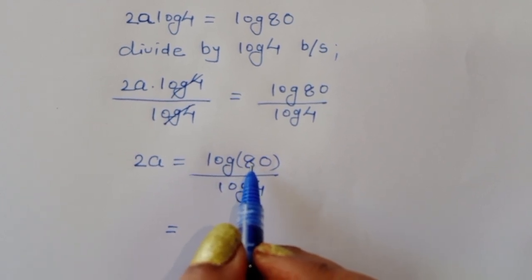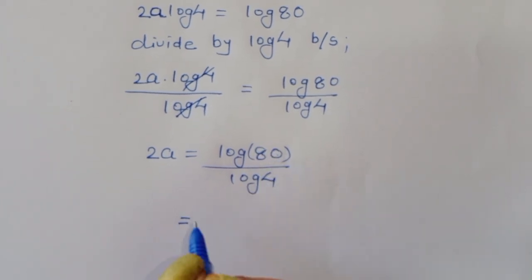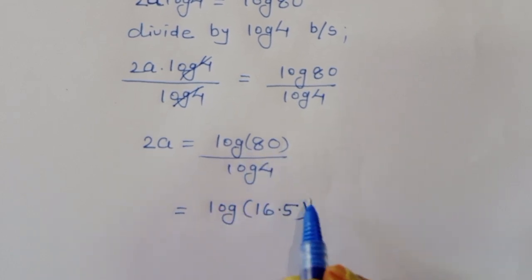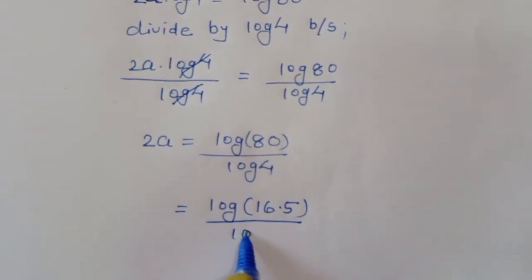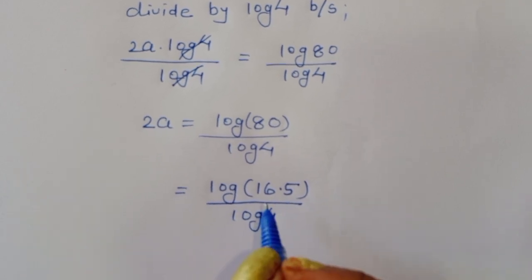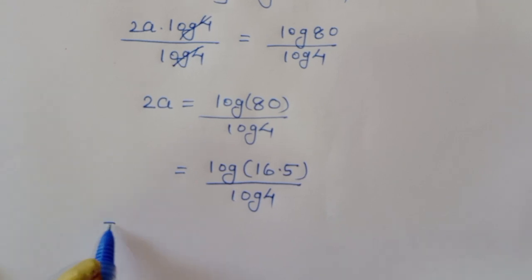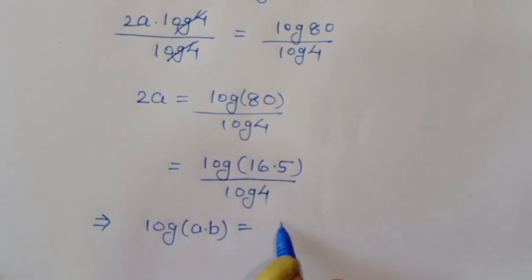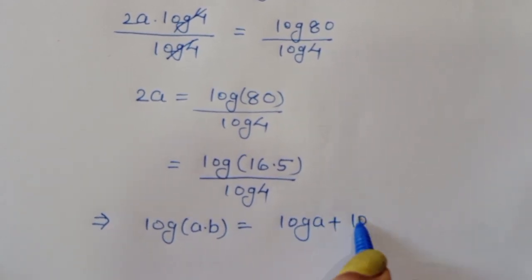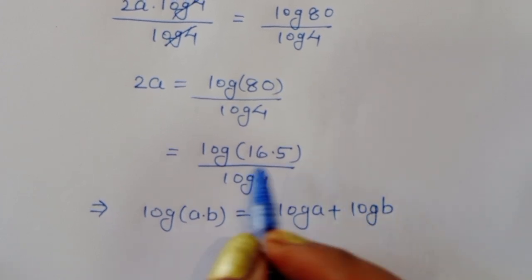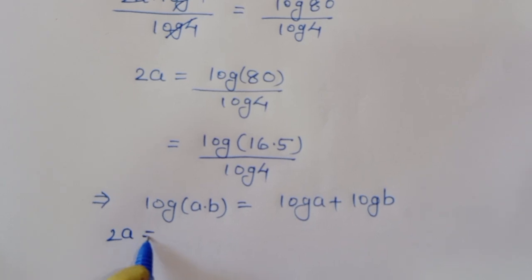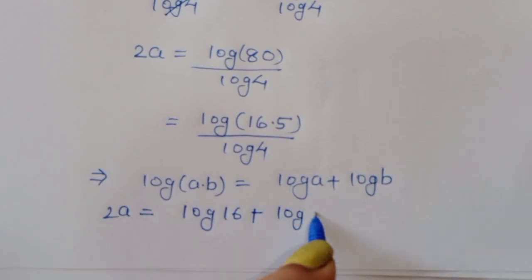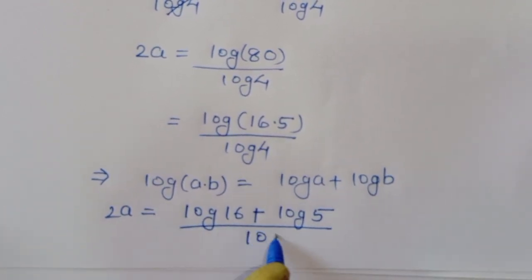We can write log of 80 as log of 16 times 5, divided by log of 4. Using the formula log of a times b is equal to log a plus log b, we get 2a is equal to log of 16 plus log of 5, all divided by log of 4.